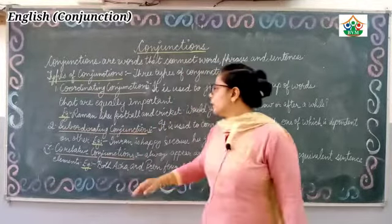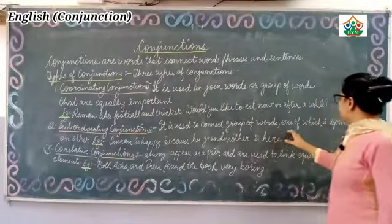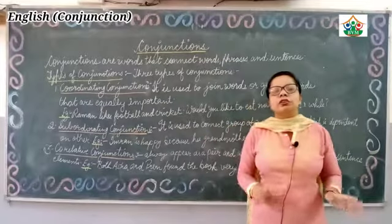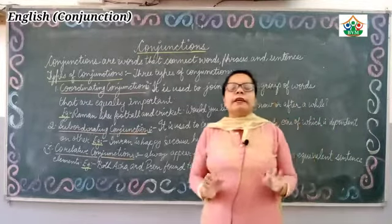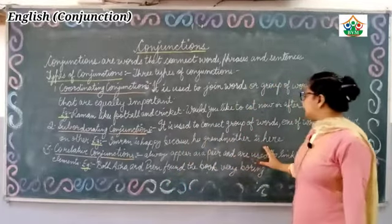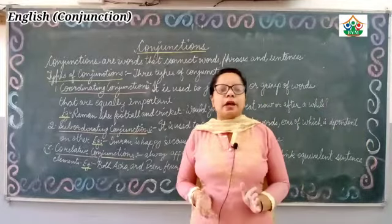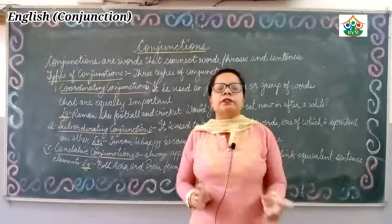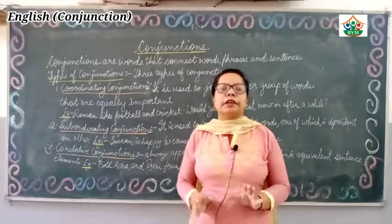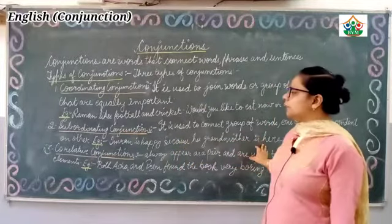The second type is subordinating conjunction. It is used to connect group of words, one of which is dependent on the other. For example: 'Imran is happy because his grandmother is here.' The sentence 'Imran is happy' is complete, but it is still dependent on the other part that explains why Imran is happy.